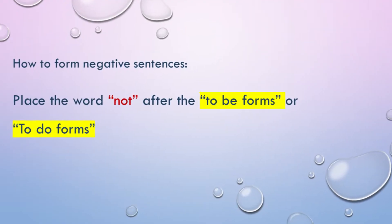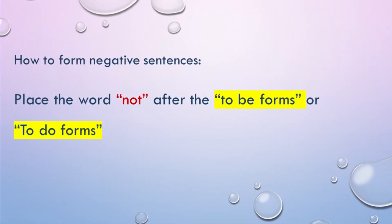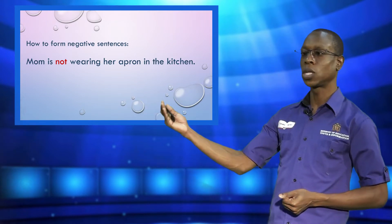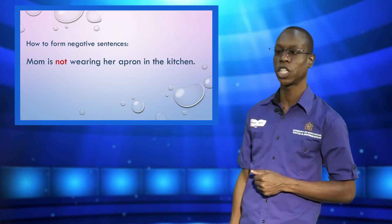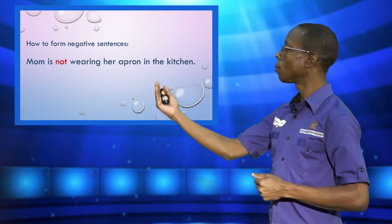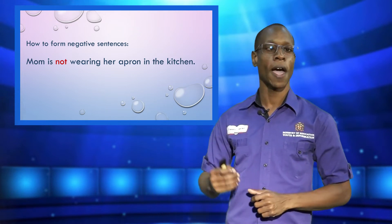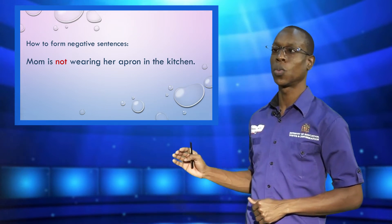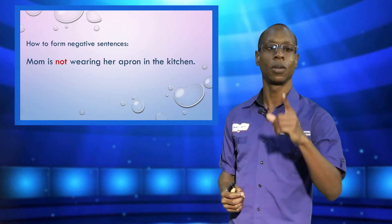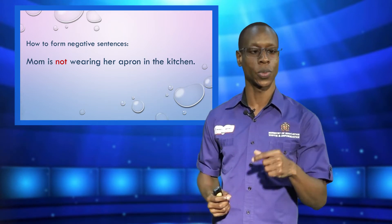Did you know that sentences can be negative? We form a negative sentence by placing the word 'not' after the forms of 'to be' and 'to do.' Here is an example: 'Mom is not wearing her apron in the kitchen.' The to-be verb is the word 'is,' and after it we inserted the word 'not' — that is the negative word.